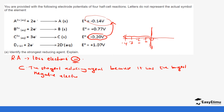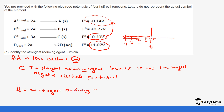C is the strongest reducing agent because it has the largest negative electrode potential. If we were to look for the strongest oxidizing agent, we look at the one that is the most positive. The one with the highest positive value is D, so D is the strongest oxidizing agent because it has the largest positive electrode potential.